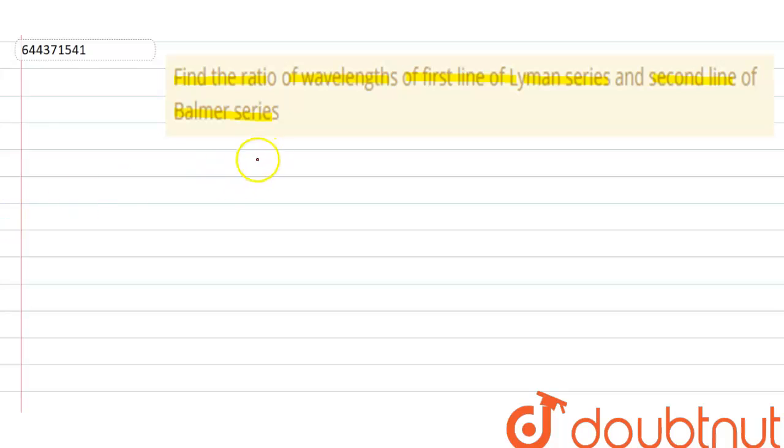This question is based on the topic hydrogen spectrum. From hydrogen spectrum, the wavelength of radiation is given by 1/λ = R(1/nf² - 1/ni²).